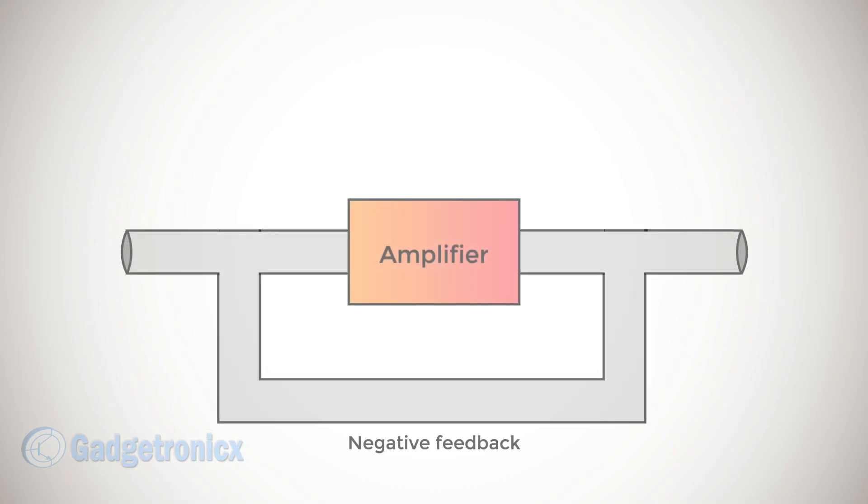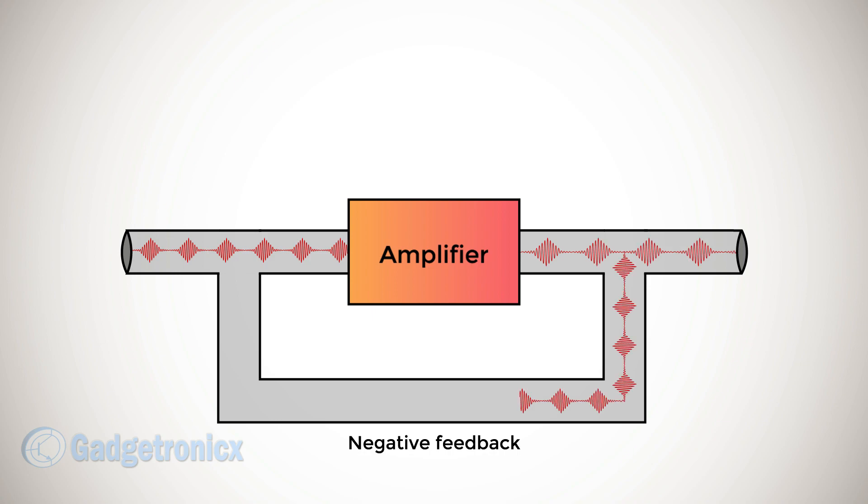In negative feedback amplifier, a portion of output signal is fed back to input in a way that the amplifier decreases the amplification and keeps the signal stable and steady.